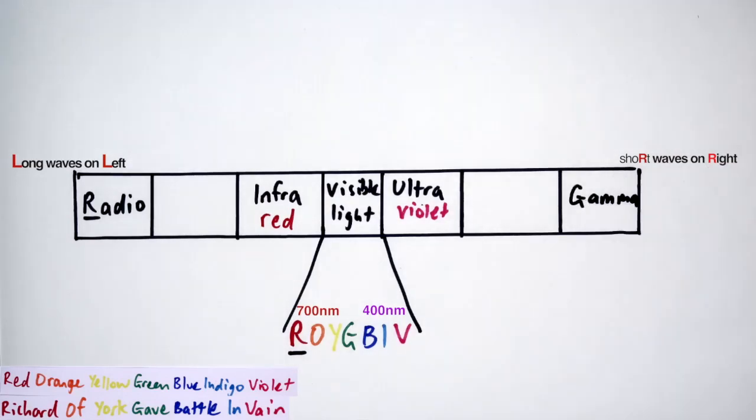I then remember that gamma rays are the shortest electromagnetic wave, so that goes in the box on the far right. Next to gamma is another wave with a very short wavelength. It's x-rays. Slightly longer than gamma rays, but still very short wavelength. That just leaves one wave missing, which is microwaves. And that goes in the final box.